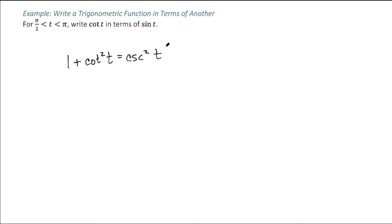That is a nice relationship because cosecant can be written in terms of sine. That's getting me this relationship between cotangent and sine that I'm looking for. So 1 plus cotangent squared of t is equal to 1 over sine squared of t.